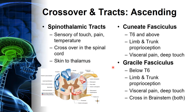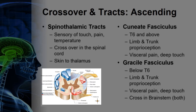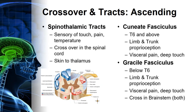Both the cuneate and gracilis fasciculi cross over in the brainstem — specifically in the medulla. For our descending tracts — the motor tracts in red, lateral and anterior — crossover depends on the specific tract. The lateral and anterior corticospinal tracts control fine limb movement. The lateral corticospinal tract crosses over in the medulla, and the anterior crosses over in the spinal cord. Knowing this gives us some knowledge when we see certain signs and symptoms in patients with penetrating injuries that aren't affecting the entire spinal cord.